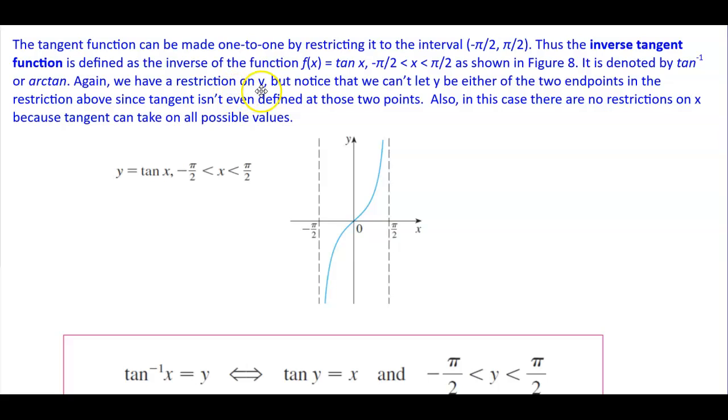Again, we have a restriction on y, but notice that we can't let y be either of the two endpoints in the restriction above since tangent isn't even defined at those two points. Also in this case, there are no restrictions on x because the tangent can take on all possible values.